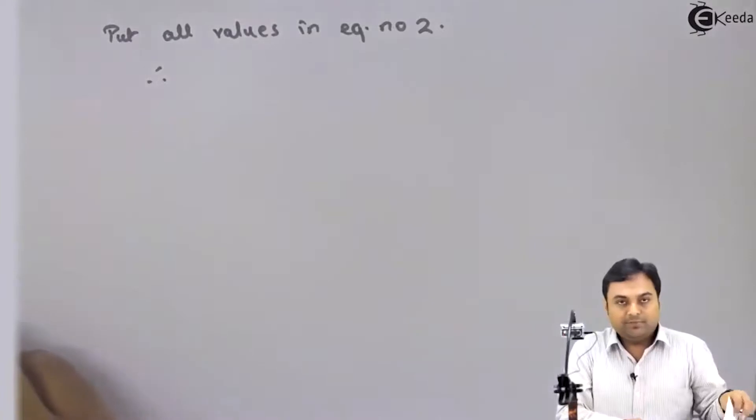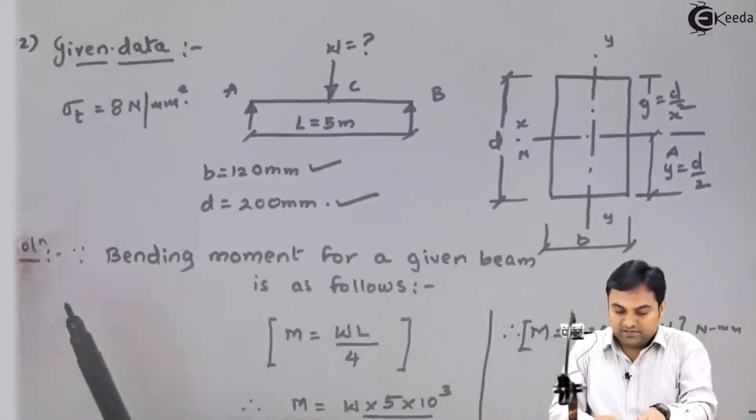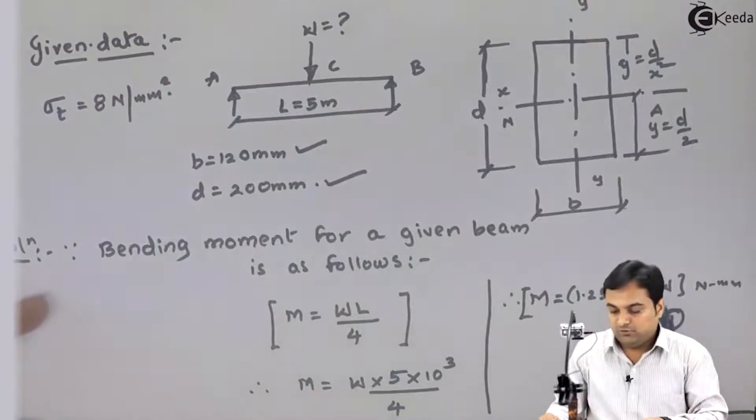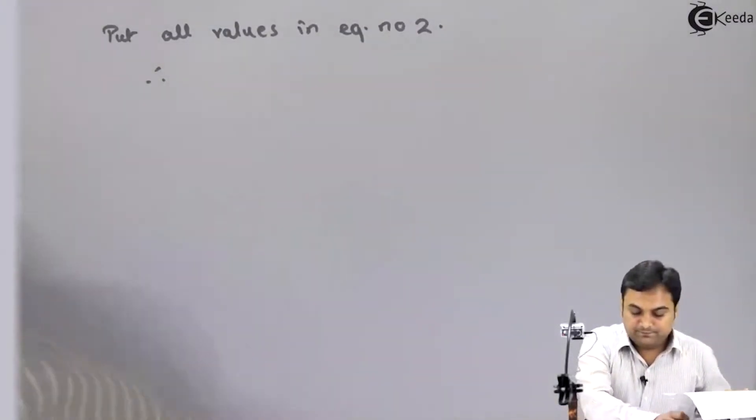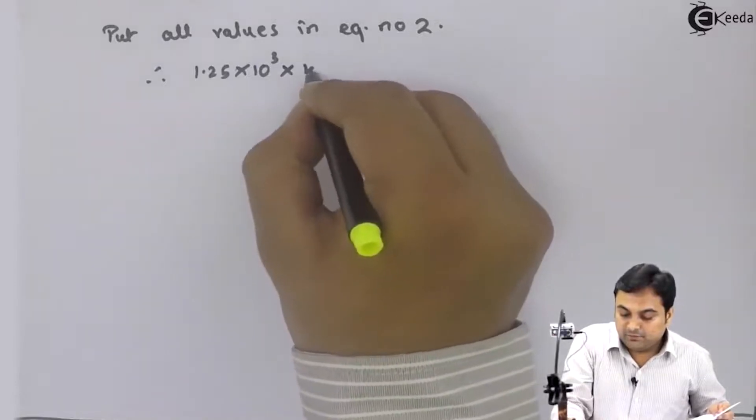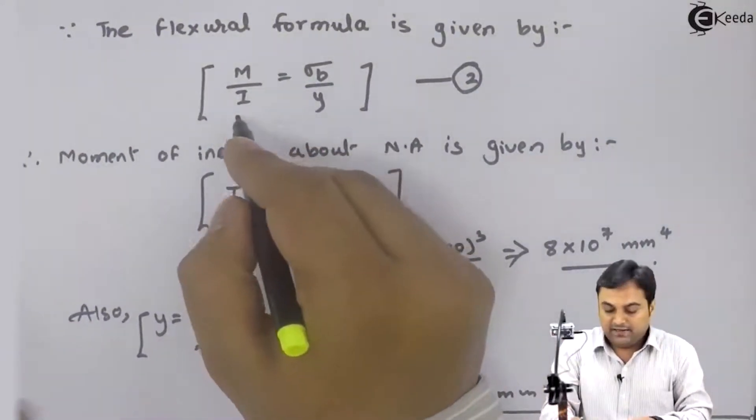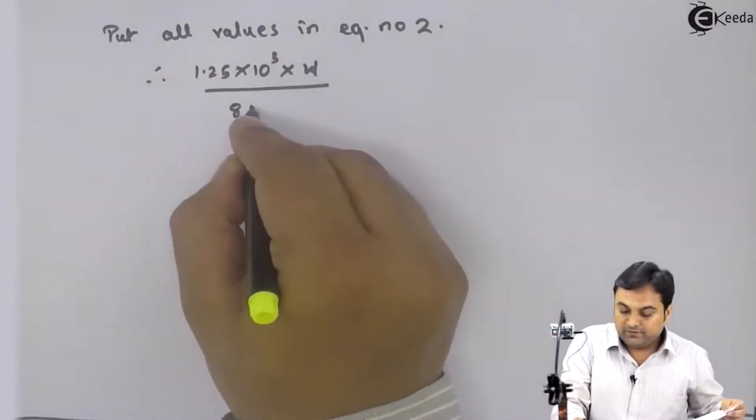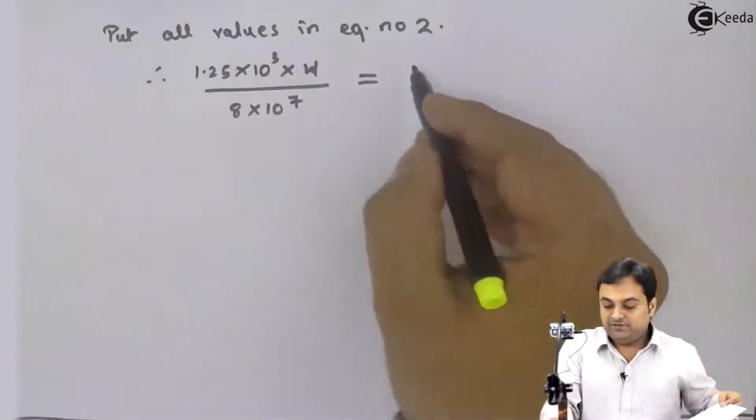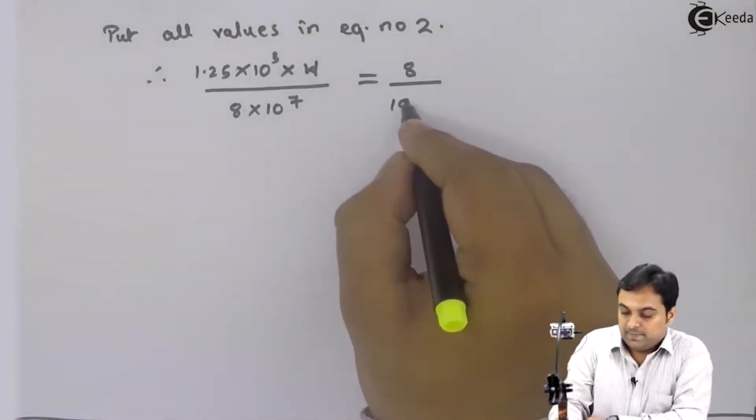When you see equation 2, first is capital M from equation number 1. This capital M is 1.25 into 10 raise to 3 multiplied by W divided by I. For I the value is 8 into 10 raise to 7, so this is equal to sigma B upon Y. Sigma B is given as 8 in the question divided by Y. Y is 100.